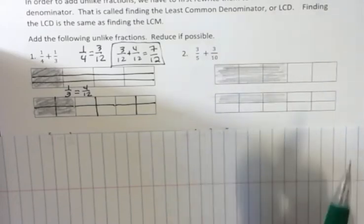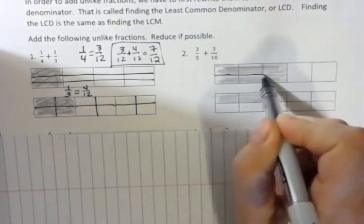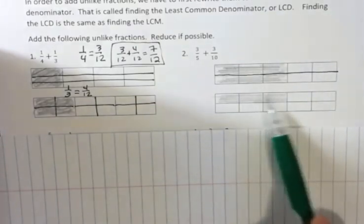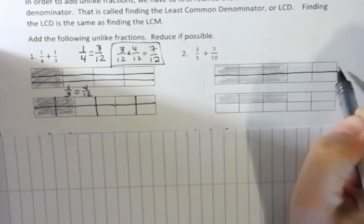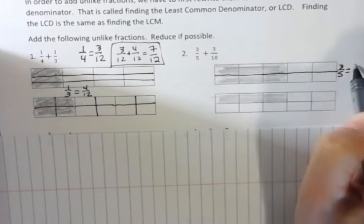Well, in order to add those together, I would just take my fifths and make that into tenths. And then I could see that I have 6, 7, 8, 9 tenths all together, because 3 fifths, we can see from the picture, is the same as 6 tenths.